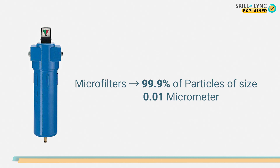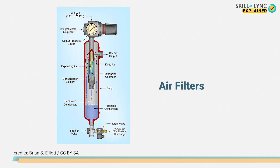Lastly, micro filters with removable cartridges can block 99.9 percent of particles of size as small as 0.01 micrometers. After the air is filtered, it is sent for drying so that it can have a low moisture content and the system cannot rust over time. For this, dryers are used.